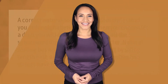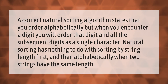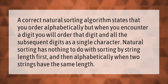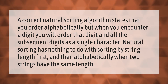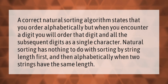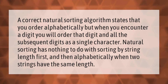A correct natural sorting algorithm states that you order alphabetically, but when you encounter a digit, you will order that digit and all the subsequent digits as a single character. Natural sorting has nothing to do with sorting by string length first and then alphabetically when two strings have the same length.